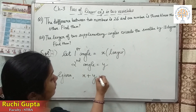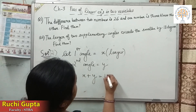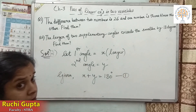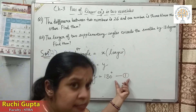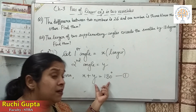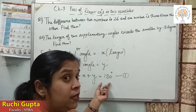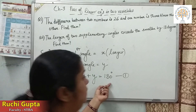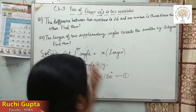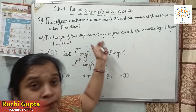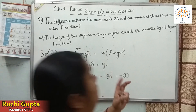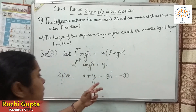Supplementary angles sum to 180 degrees and complementary angles sum to 90 degrees. The two equal angles that are complements of each other are both 45 degrees, since 45 plus 45 is 90. The two equal angles that are supplements of each other are both 90 degrees, since 90 plus 90 is 180.